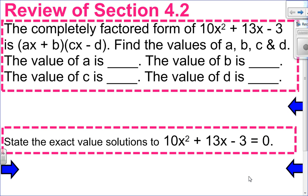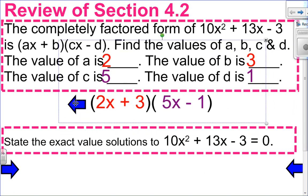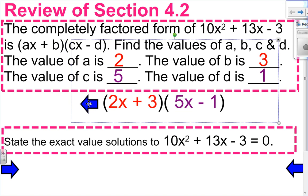In this question, we have 10x squared plus 13x minus 3, and we want to factor that as ax plus b times cx minus d, and fill in the blanks. It factors as 2x plus 3 times 5x minus 1.